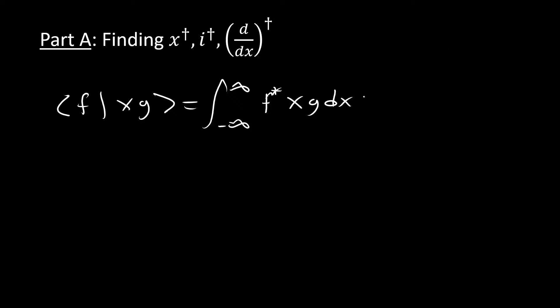So bra f ket x g is equal to the integral over all space of f star x g dx. And we could work through this and do our integration by parts to show that then we're going to get an x f star g dx, and then we could show that that's equal to bra x f ket g. But we really don't want to do that. That's doing a little bit too much. What we could look at is the actual operator or what we're working with here, which is just x.